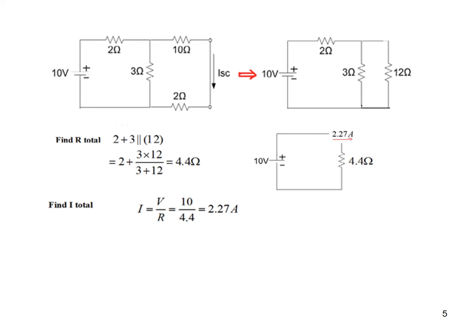The total current of 2.27 flows up to this point and then divides into two parts. We are interested in the current in the short circuit branch. Using the current divider (KCL) formula: I short circuit equals total current 2.27 divided by total resistance, multiplied by the opposite arm 3. So I short circuit is 0.45 ampere.